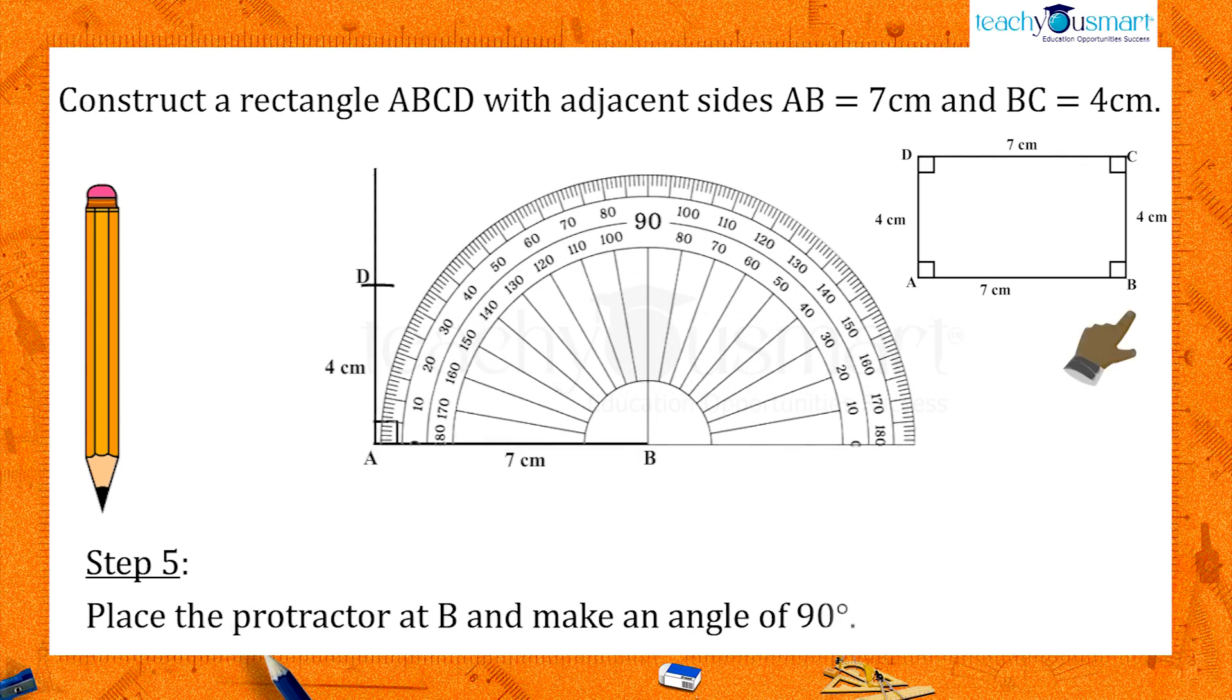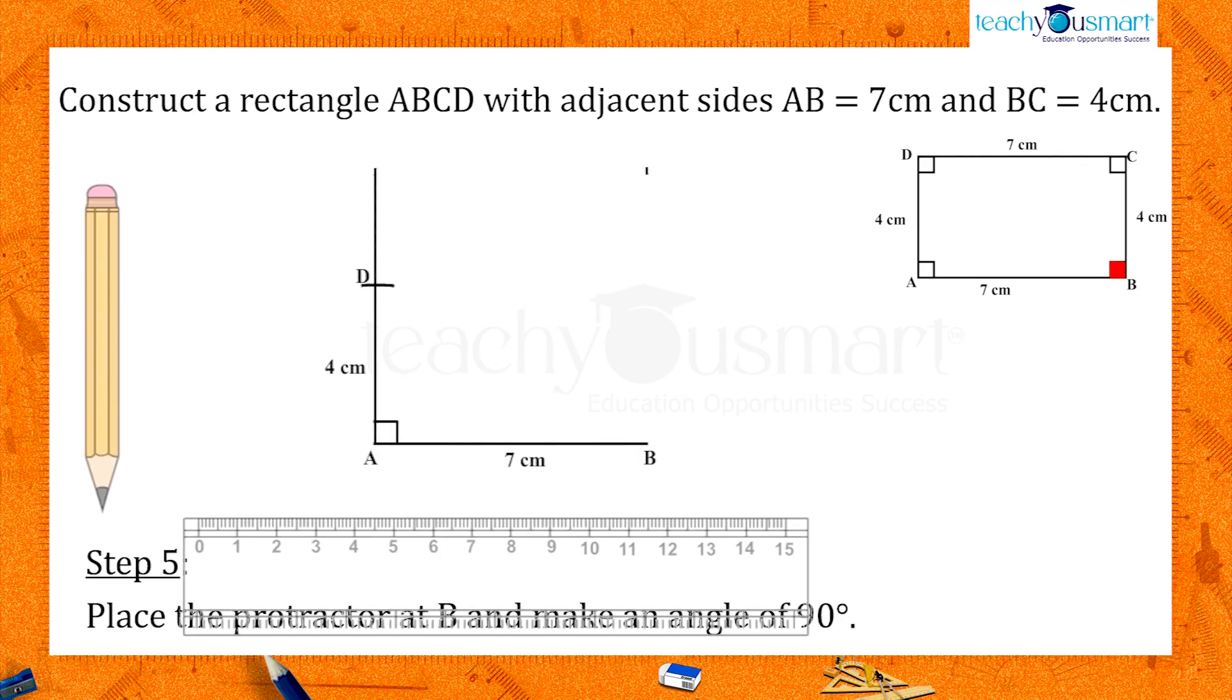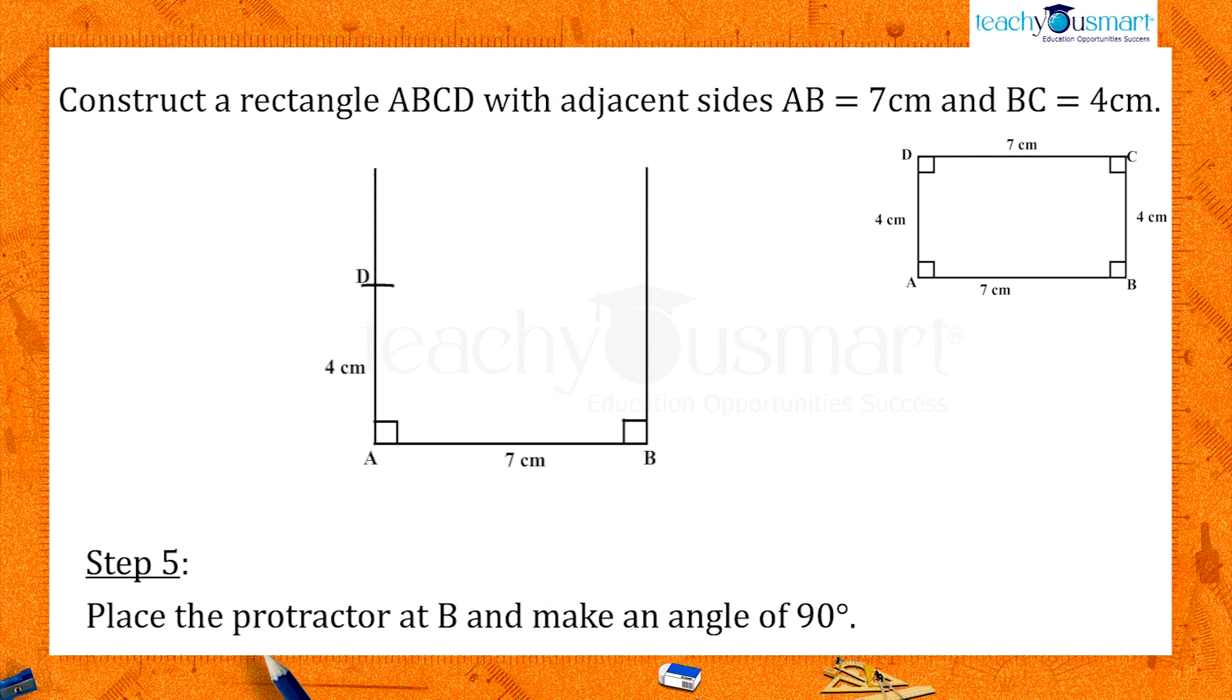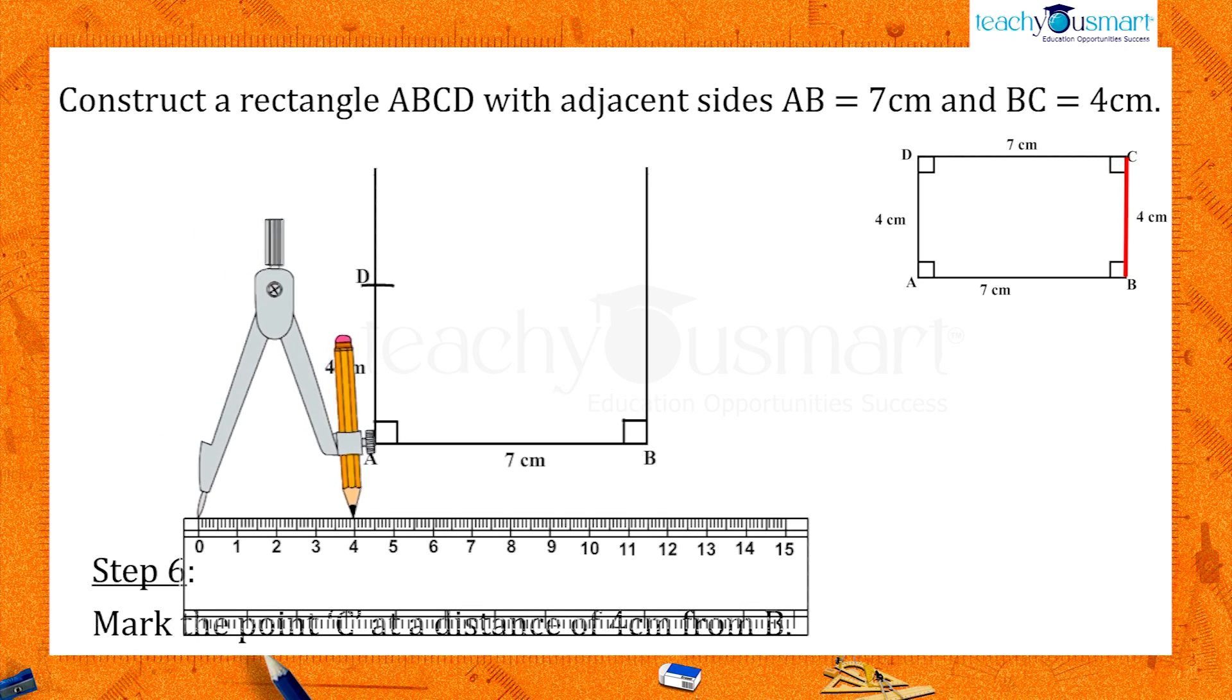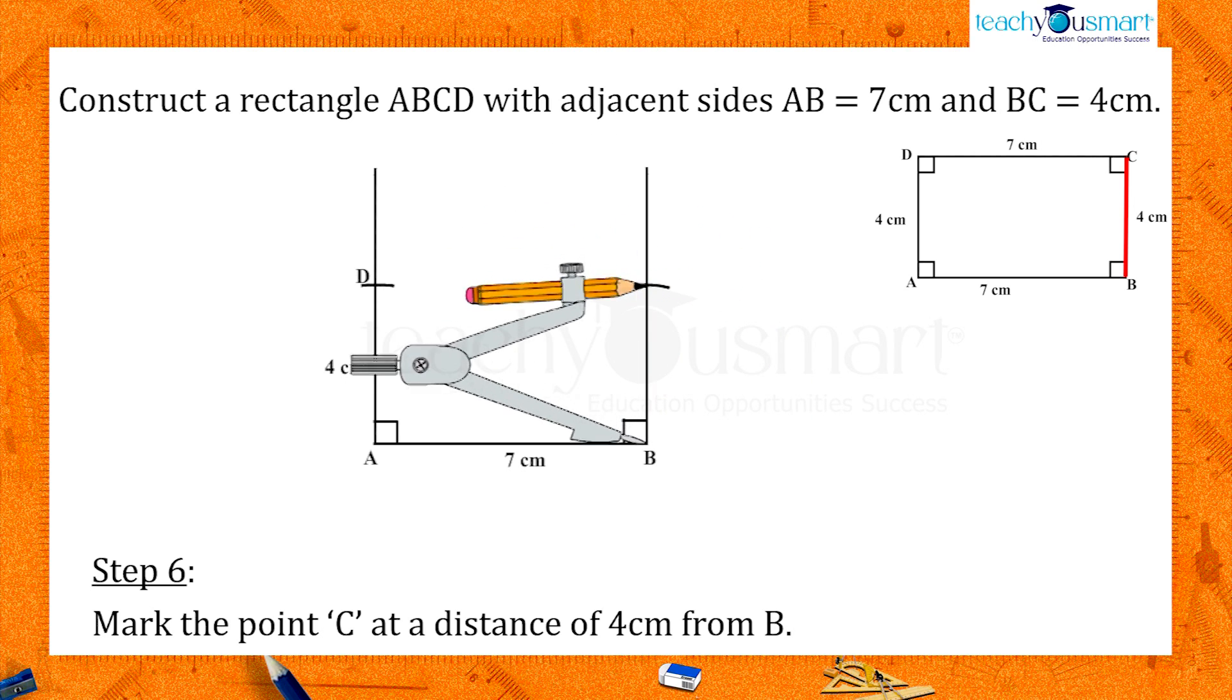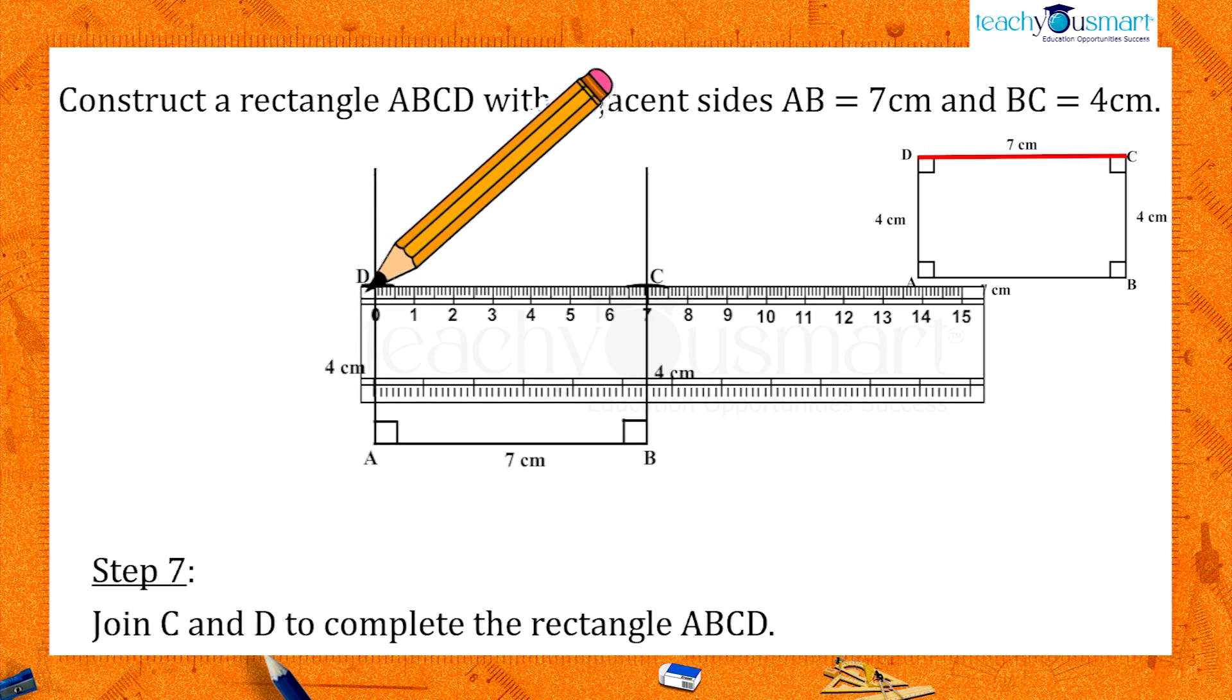Now place the protractor at B and make an angle of 90 degrees. As earlier, mark point C at a distance of 4 cm from B. Now join C and D to complete the rectangle ABCD.